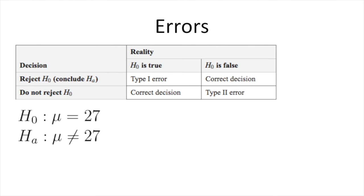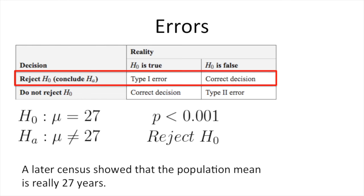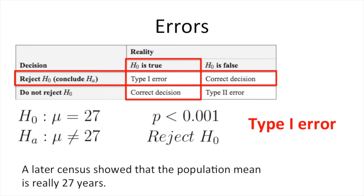Let's look at an example. We tested whether the mean ideal marriage age was different from 27 and rejected the null hypothesis with a very small p-value. Let's say a later census — where data are collected from the entire population — showed that the population mean is really 27 years. We rejected the null hypothesis, but in reality the null was true. We committed a type 1 error.